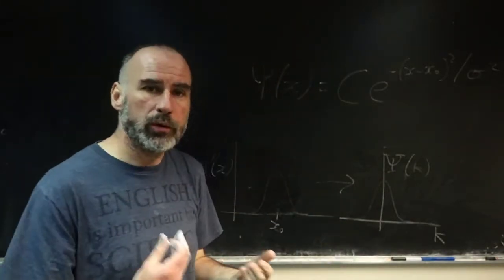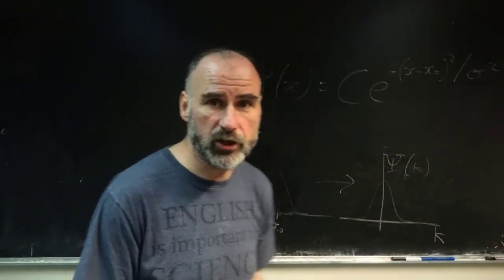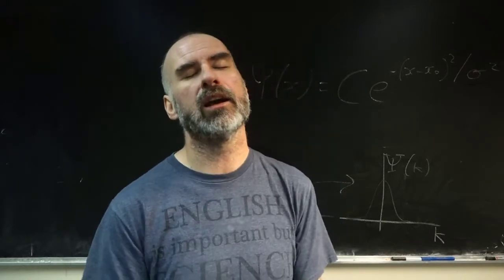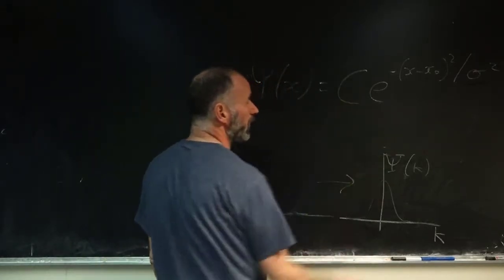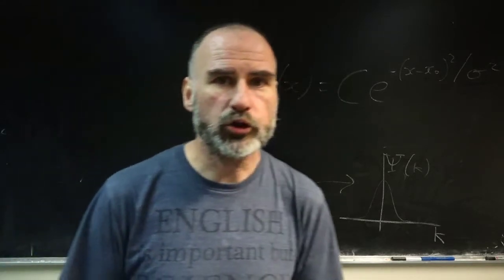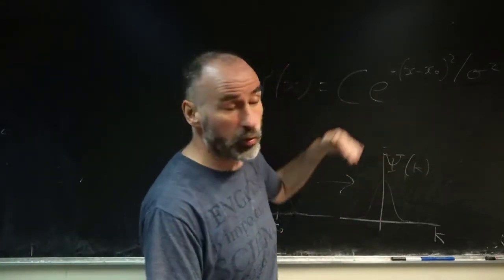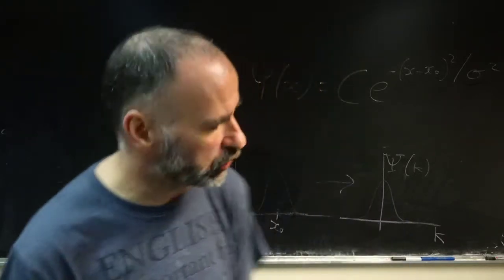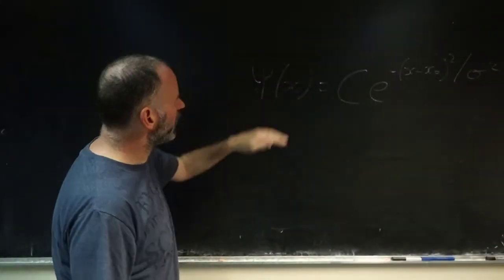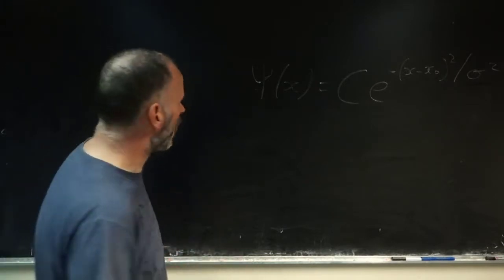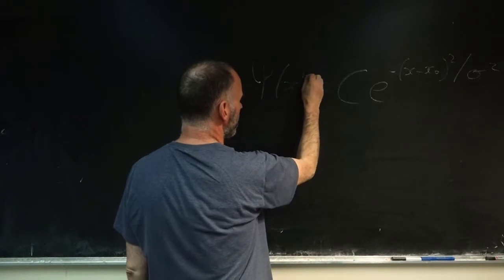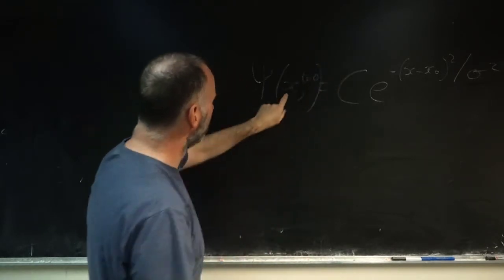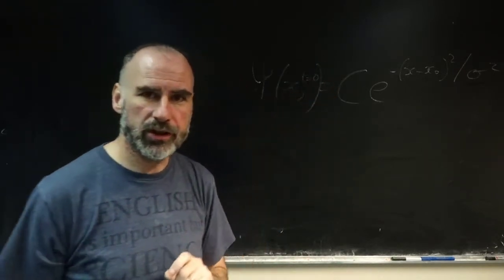Notice it's real. So when we take this, multiply it by its complex conjugate to get the modulus squared, because this is a real function, we end up with just the square of this function — the complex conjugate of a real function is the function itself. But this is just the spatial part. We are also going to be interested in how this evolves in time. This represents the spatial part at time equal to zero.